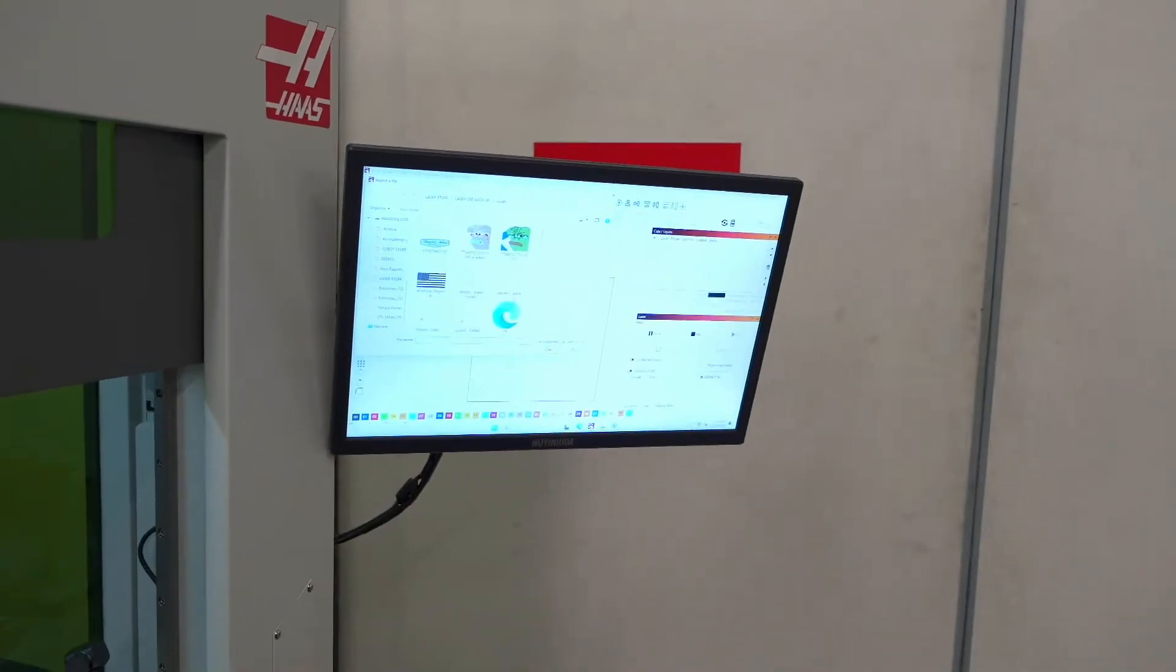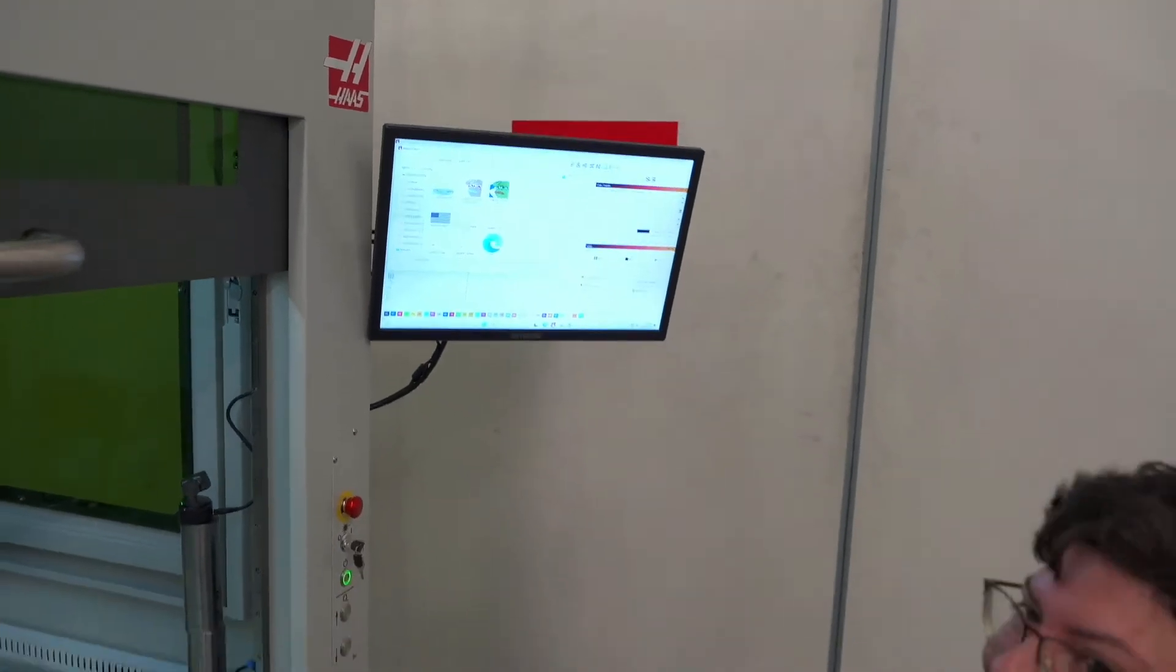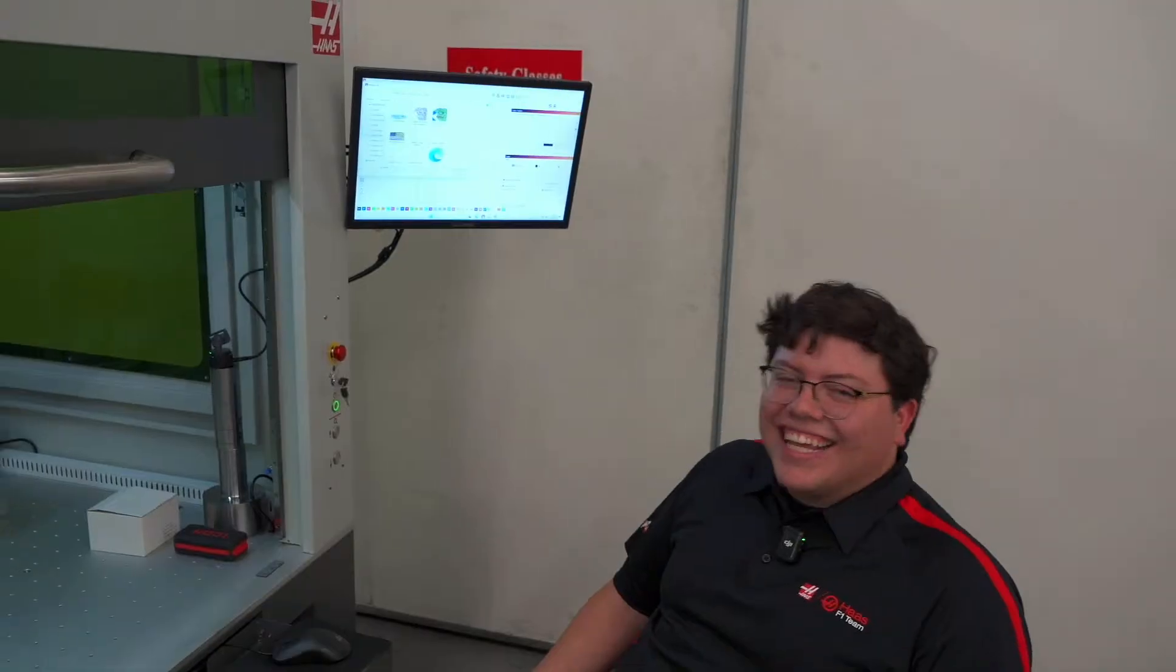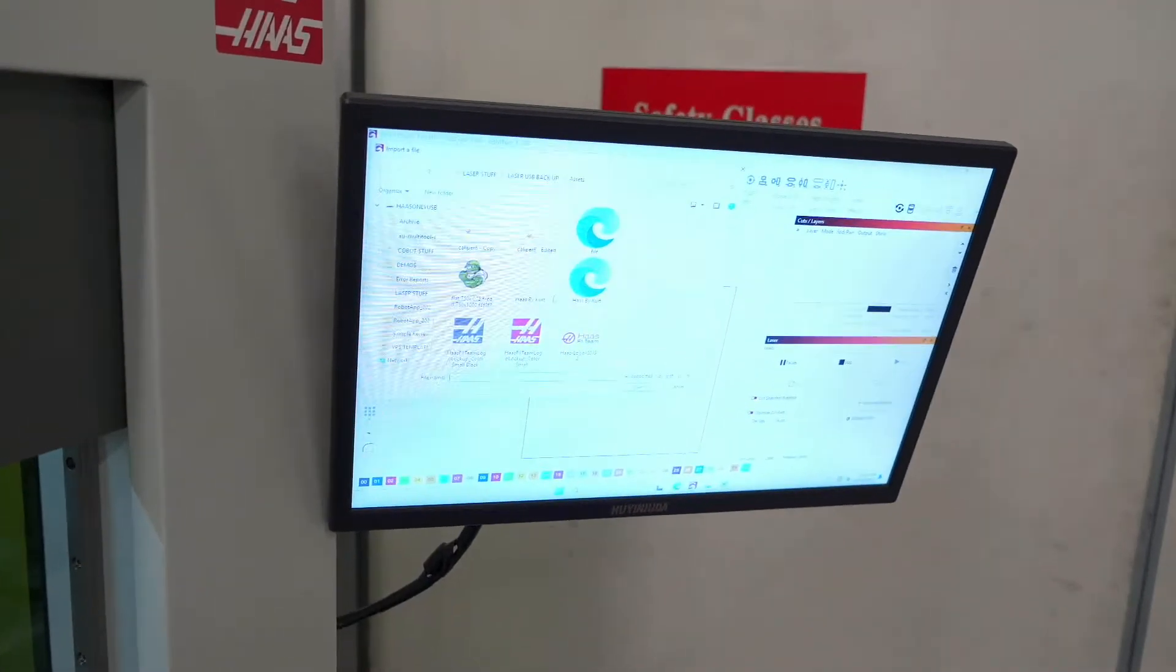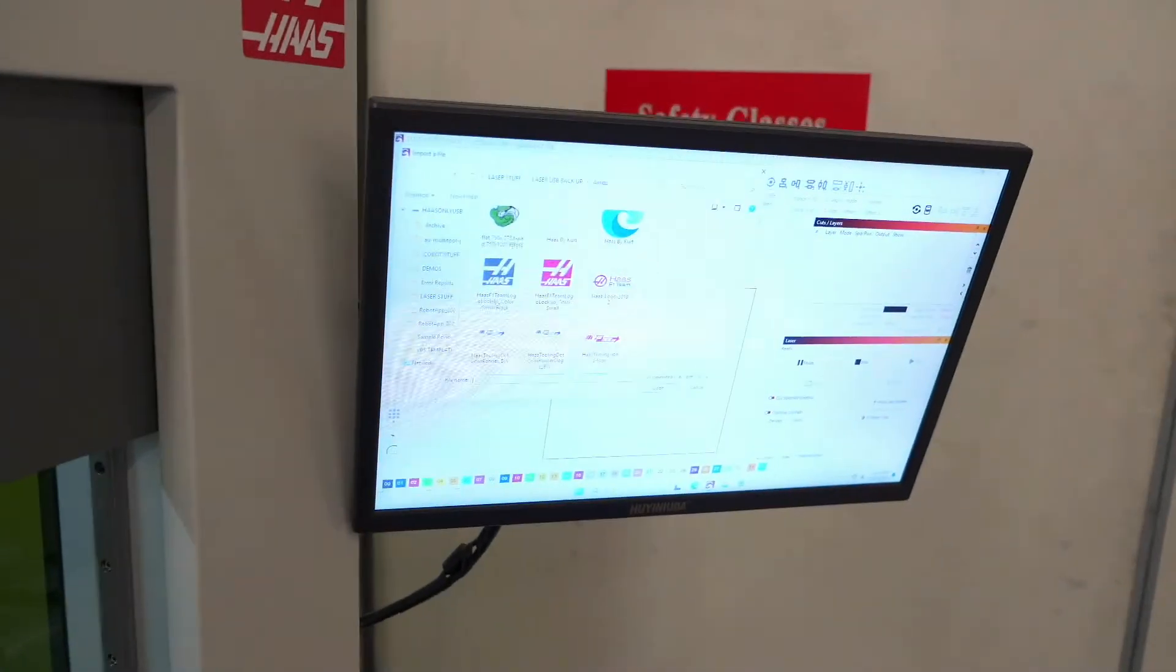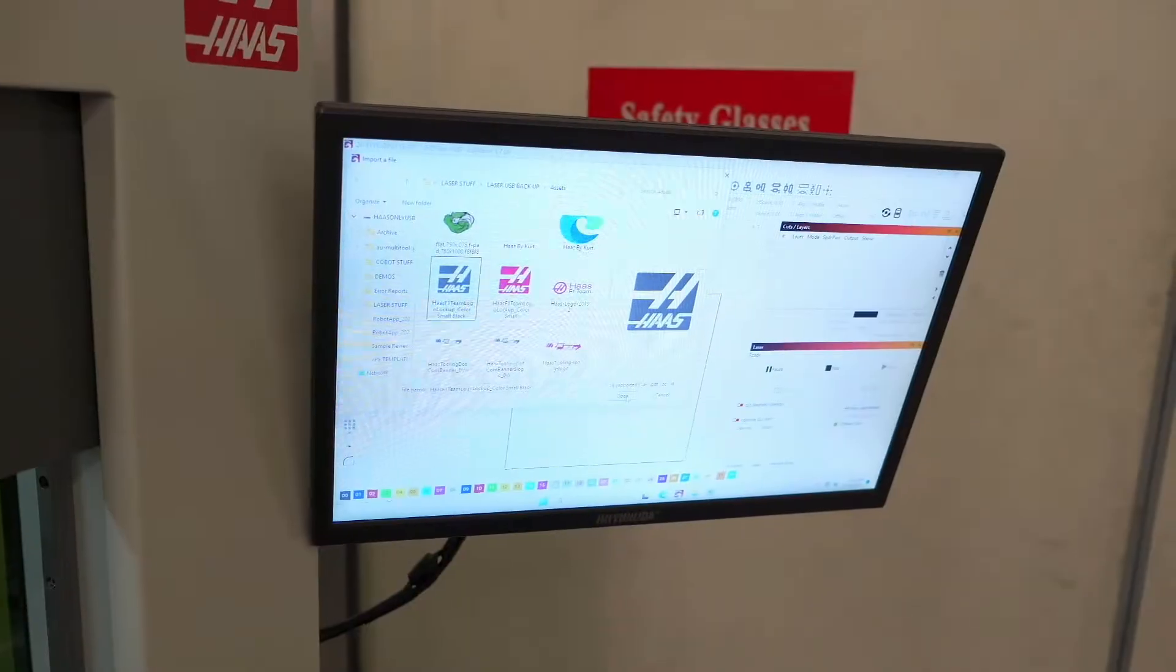So you can do memes, I see Pepe there. This is a pro meme machine. Basically any image you want, either memes or logos, company logos, people's faces. That's the cool thing about the HL50E and the XT version as well. To import an image, all we're going to do is select this image right here.